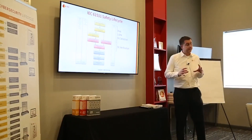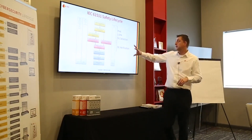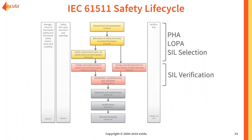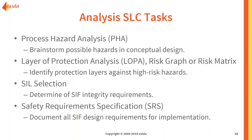When determining your target SIL level, we're in the analysis phase of the life cycle — the PHA and LOPA/SIL selection phase. In this phase we do process hazard analysis to identify potential hazards, then layer of protection analysis, risk graph, or risk matrix to identify protection layers and overall risk levels. Then we do SIL selection to specify the integrity requirements the safety instrumented function must meet, and document everything in a safety requirements specification.